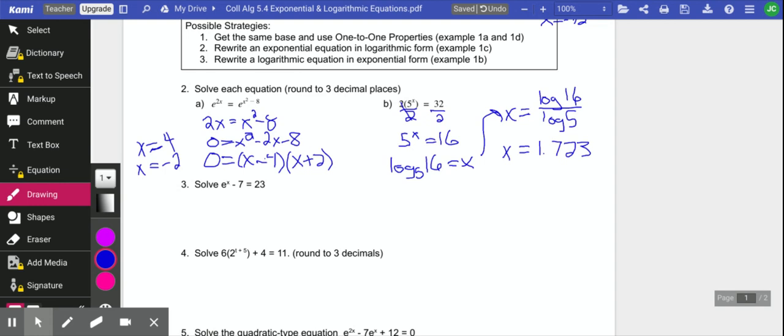Let's check out number 3. I'm going to start by adding 7 to both sides. So we have e to the x equals 30. Definitely can't use the 1 to 1 property here. I'm in exponential form, and I can't do anything with it. So let's go to logarithmic form. This is log base e, which is natural log of 30 equals x.